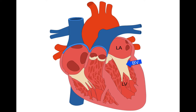Blood then flows from the left atrium through the bicuspid valve, also known as the mitral valve, into the left ventricle. The left ventricle then contracts and pushes the blood through the aortic semilunar valve into the aortic arch.